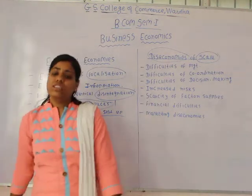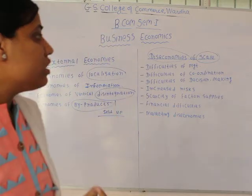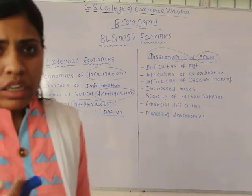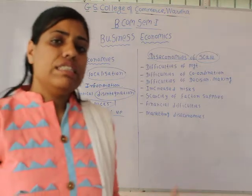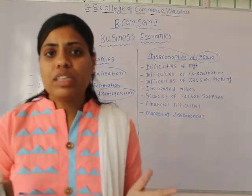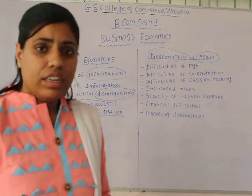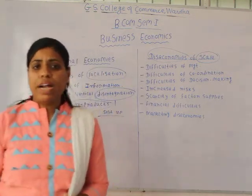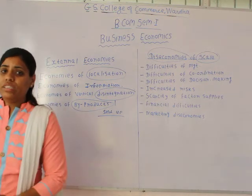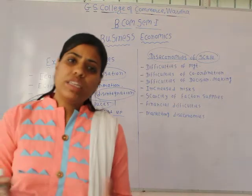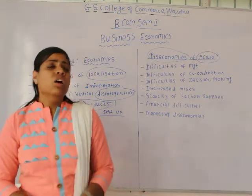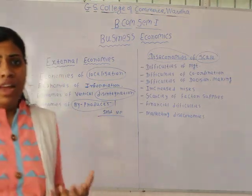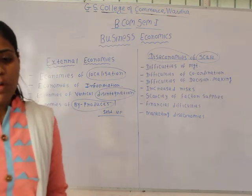The second diseconomy is difficulties of coordination. Coordination is one of the very important factors which adds to the productivity of the firm. If there is coordination, work will go smoothly and efficiency and effectiveness can be brought to the work. But when the size of the firm increases, the problem of coordination also starts developing. When there are only two or three departments, it is easy to make coordination among them. But when the size of the organization increases, the number of departments and personnel also increases, and it becomes difficult for a manager or supervisor to make coordination among them.